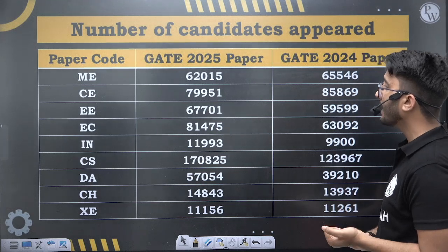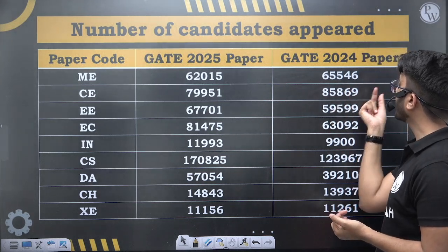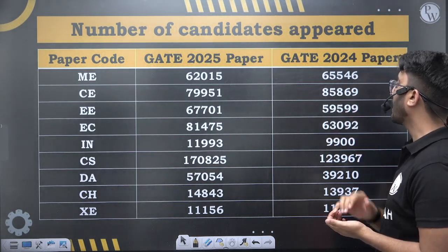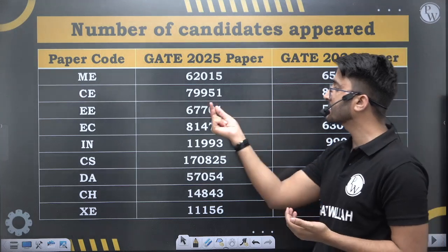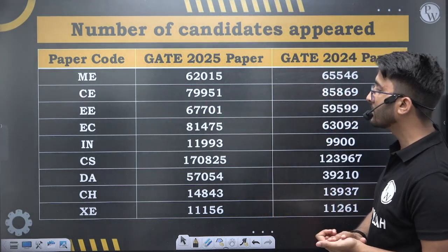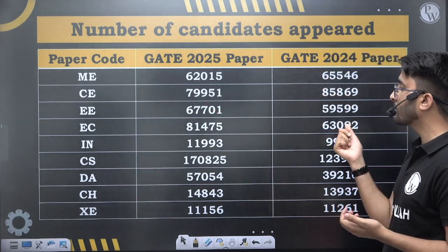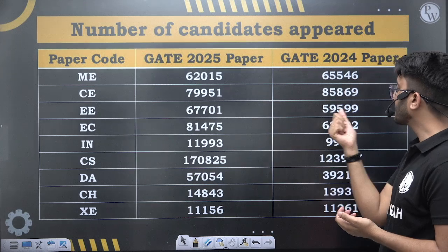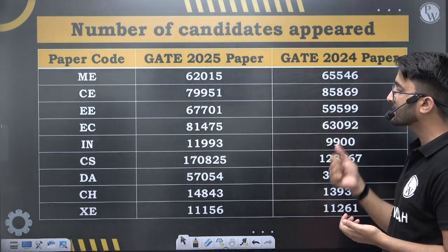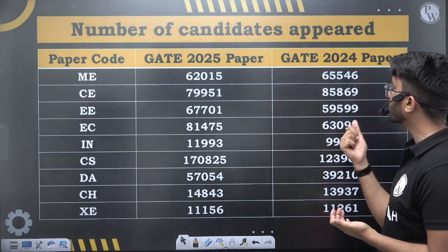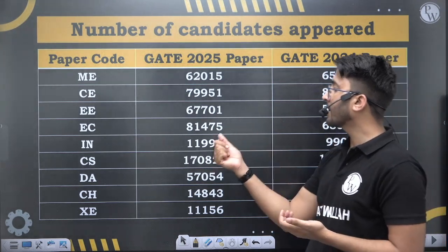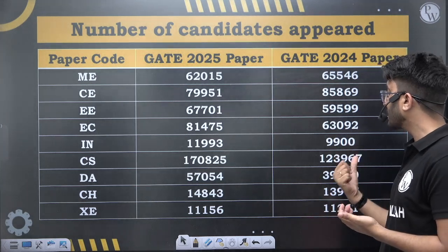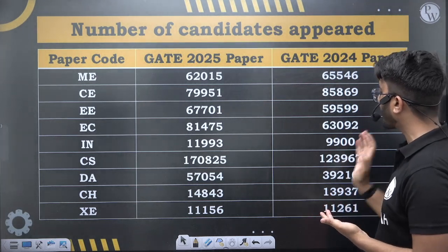For Electrical (EE), last year 59,599 students appeared and this year 67,701 students appeared. For ECE, 63,000 students appeared last year and 81,475 students appeared this year. For IN (Instrumentation), 9,900 students appeared last year and 11,993 students appeared this year. For CS, 1,23,967 students appeared last year.